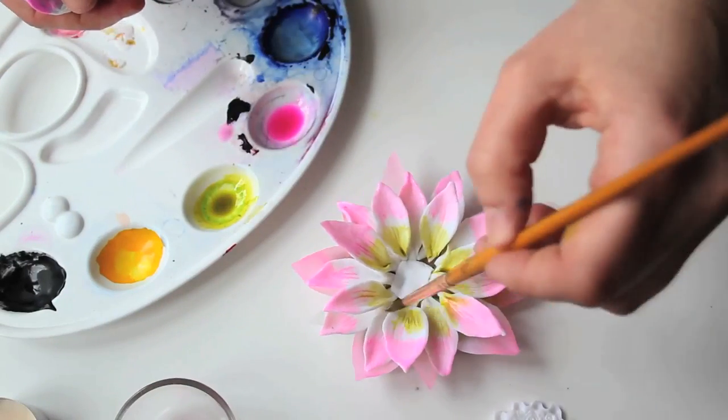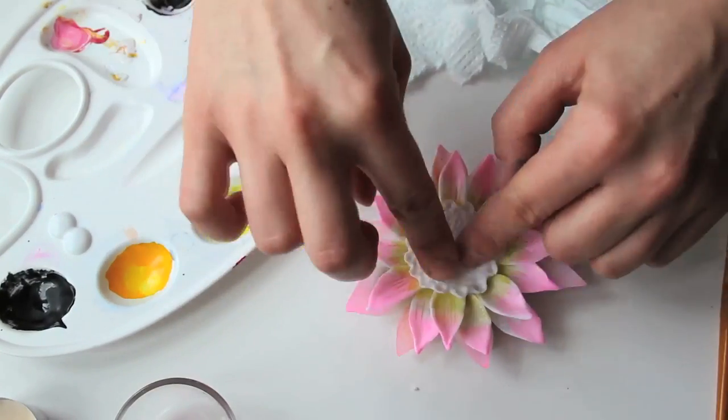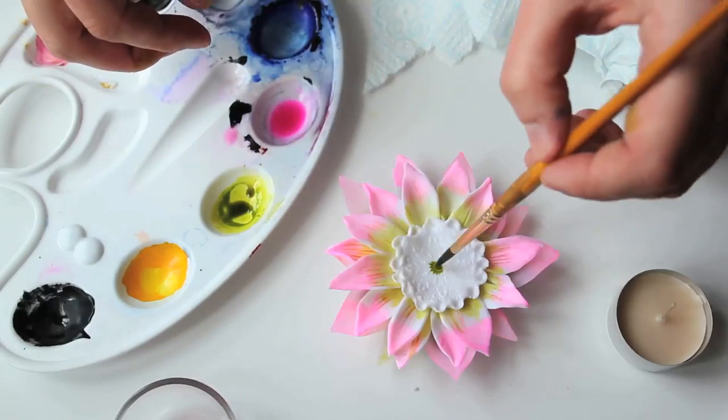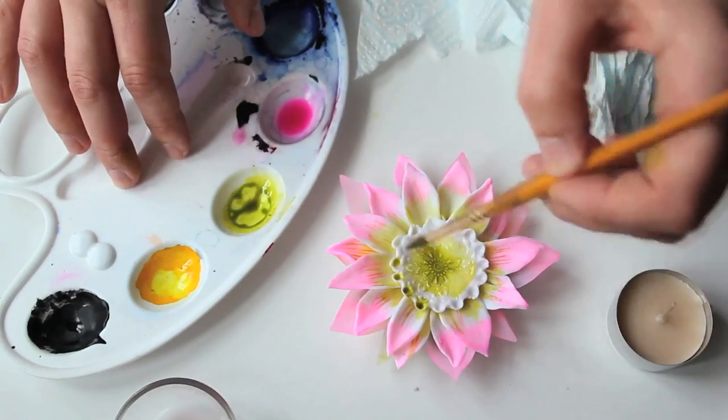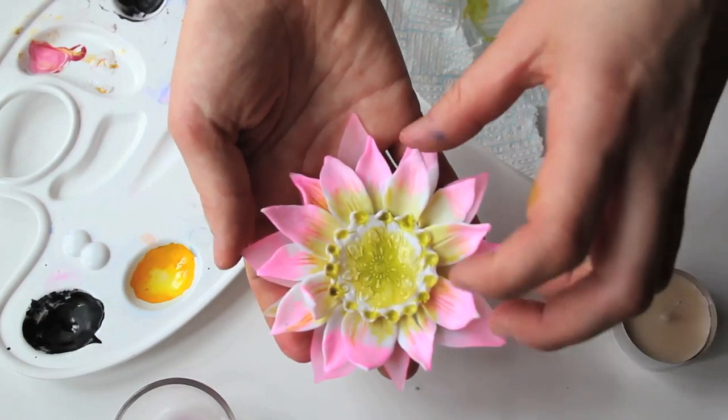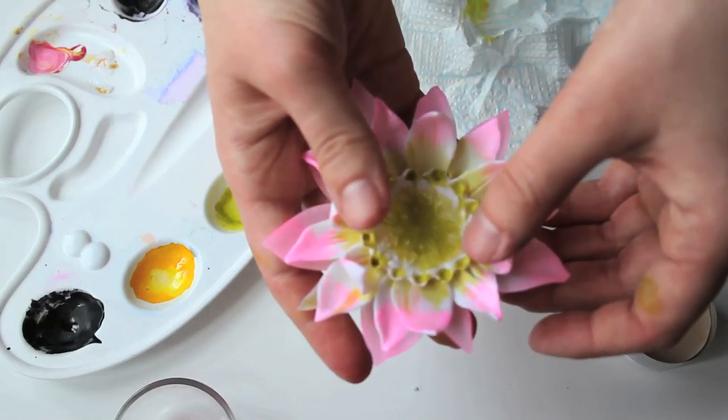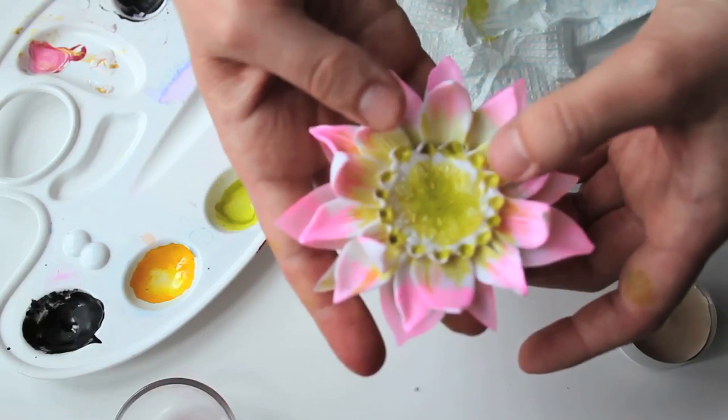The last element, the heart of the flower, should now be placed in the middle and stained too. Before baking for the last time, try and arrange the petals in more of a three-dimensional look.